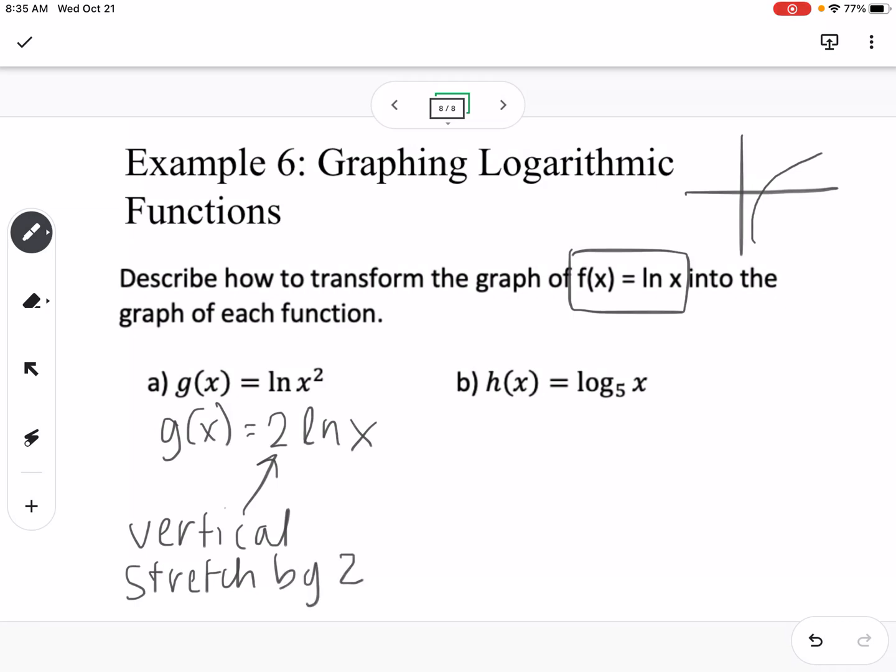Now B is a little bit trickier, so you'll notice it's not even written as a natural log right now. But we know how to turn something from a log base 5 into natural log using change of base. So if I use change of base, and I'm specifically going to use natural log since that's my parent function.